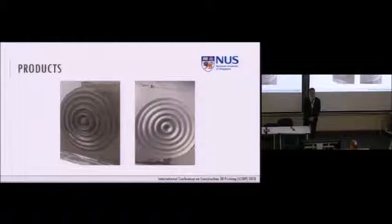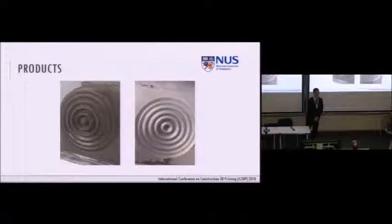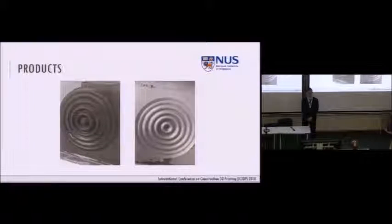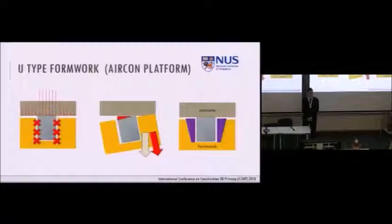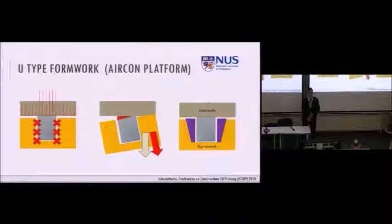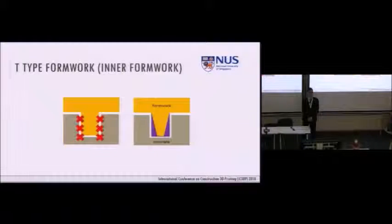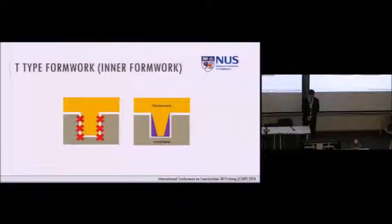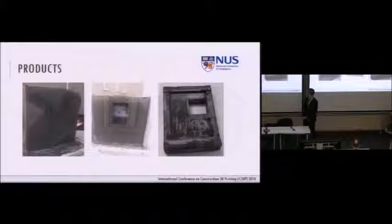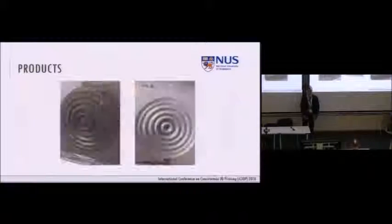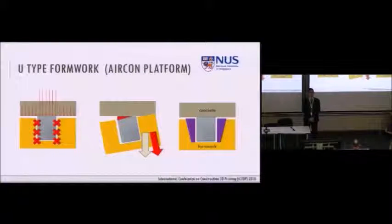These are the other products that we produce. This one is like water waves — a water drop design. The left-hand side is cast concrete; the right-hand side is the formwork. They are almost equivalent, and you can see the surface finishes are very accurate, as you cannot produce with a normal way. During our casting, molding, and demolding, we have several kinds of problems. We're trying to produce features like the aircon platform, which is a U-shaped or T-shaped formwork. By the time you are casting, there's no problem. But by the time you are demolding, you may have the problem of breaking the platform. So we also look into these factors and try to solve this problem.